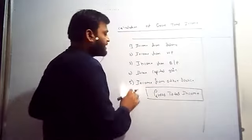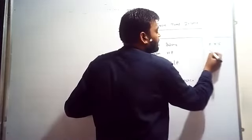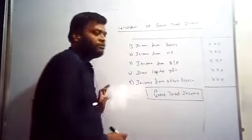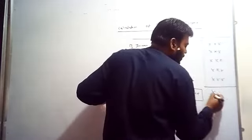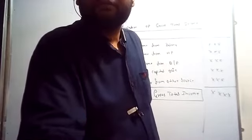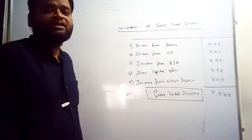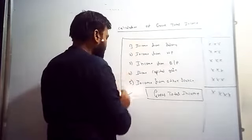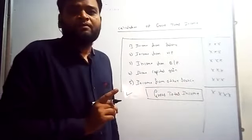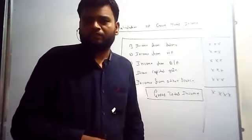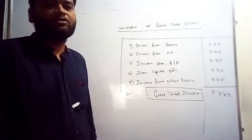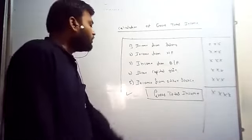When you add all five heads together, you get the gross total income. Gross total income is the aggregate of all the heads of income. It is one step before the taxable income — you calculate gross total income first, then proceed to taxable income.